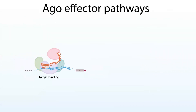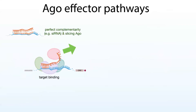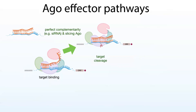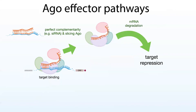When it finds a target where the seed matches, what happens next depends on a couple of things. If the whole sequence matches — not just the seed sequence, but the entire sequence, or at least the majority of it consistently matching past the point where it's going to get cleaved — and if Ago is in slicing competence, then Ago can slice the target. By slicing, we mean that Ago cuts the target across from nucleotides 10 and 11 of the guide, and this is going to lead to raw ends for exonucleases to degrade the messenger RNA.